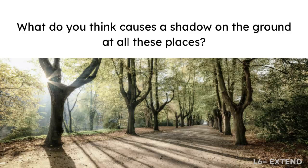In the optional extend portion of the lesson, students can investigate their shadows and how to make shadows outside. You can take students back outside. This time, be sure to point out where the sun is in the sky, what the object is that is making a shadow, and where the shadow is on the ground. You will do this several times with different objects on the playground or schoolyard.